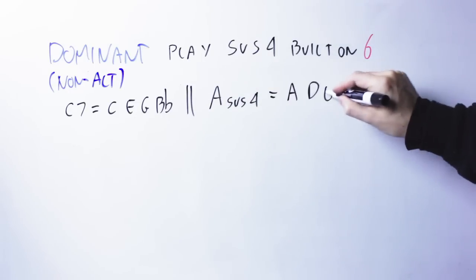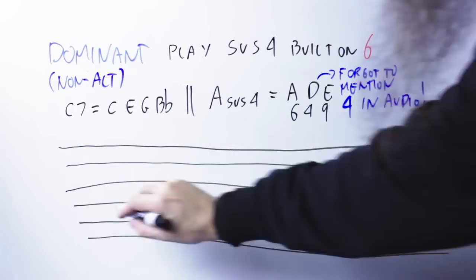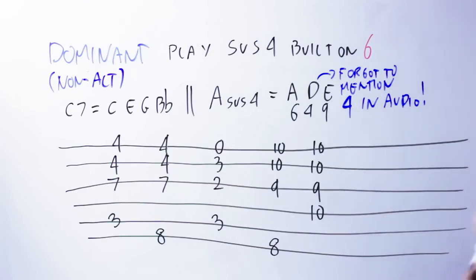Which are respectively the major sixth, the ninth, and the third of the chord. So you get a six-nine chord. So for this C7, the playable shapes would be those.